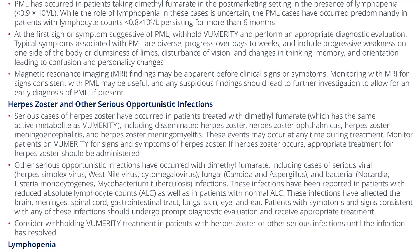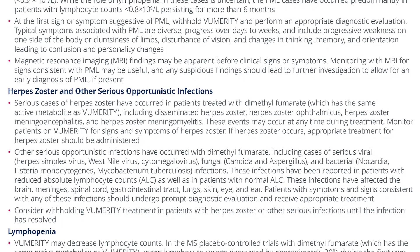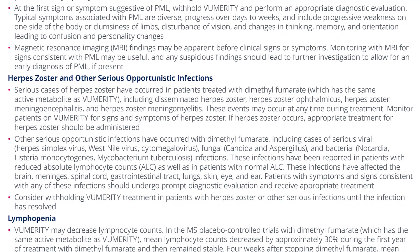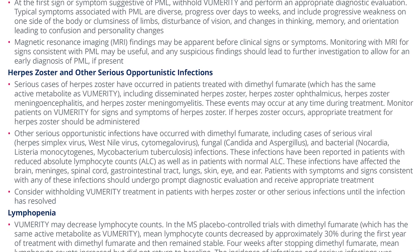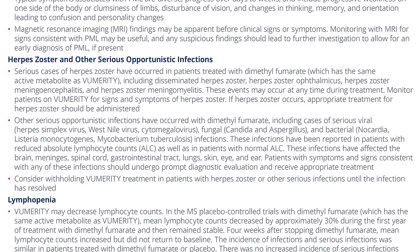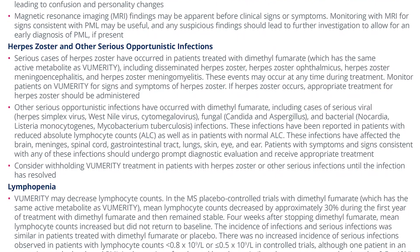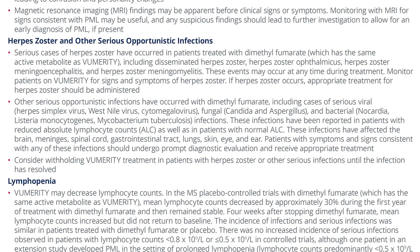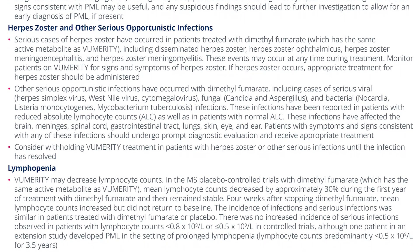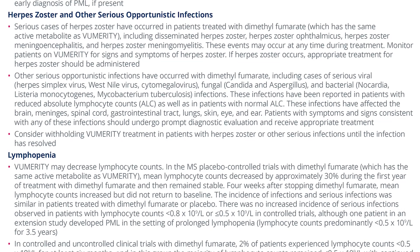Other serious opportunistic infections have occurred with dimethyl fumarate, including serious viral infections — herpes simplex virus, West Nile virus, cytomegalovirus — fungal infections (candida and aspergillus), and bacterial infections (nocardia, listeria monocytogenes, mycobacterium tuberculosis). These infections have been reported in patients with reduced absolute lymphocyte counts, ALC, as well as in patients with normal ALC, and have affected the brain, meninges, spinal cord, gastrointestinal tract, lung, skin, eye, and ear. Patients with symptoms consistent with any of these infections should undergo prompt diagnostic evaluation and receive appropriate treatment. Consider withholding Vumerity in patients with herpes zoster or other serious infections until the infection has resolved.